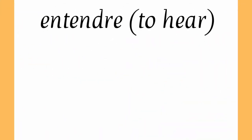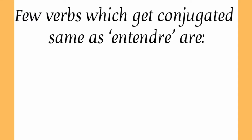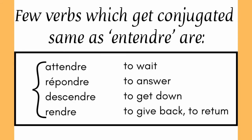So now, as we have taken the verb entendre, let's see how this verb will be conjugated. You can see there is nothing after 'entend', that is the radical, with il and elle — there is no other ending. You can also hear the z sound, which is the liaison that we have already covered in our previous videos. There are a few more verbs which get conjugated the same way as entendre: attendre, which means 'to wait'; répondre, which means 'to answer'; descendre, which means 'to get down'; and rendre, which means 'to give back or to return'.